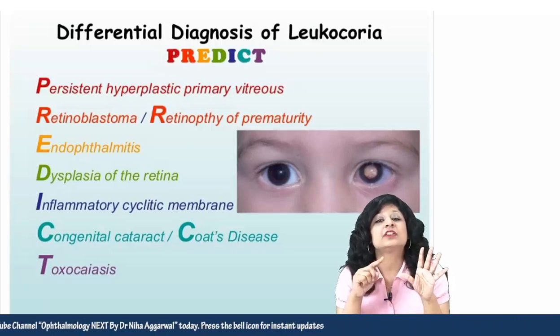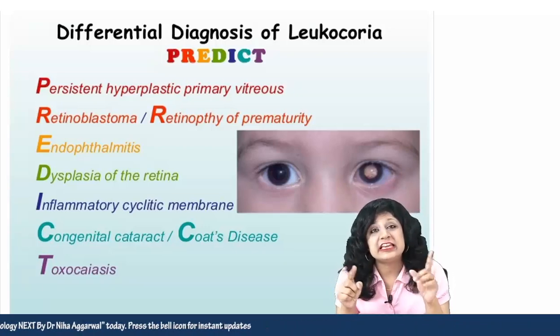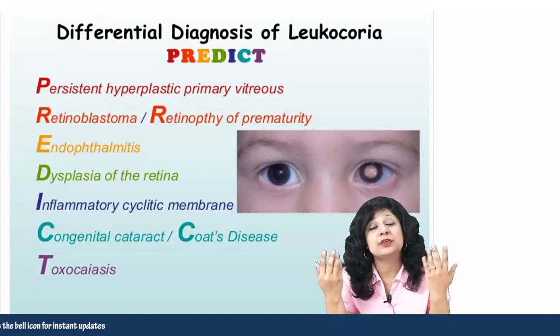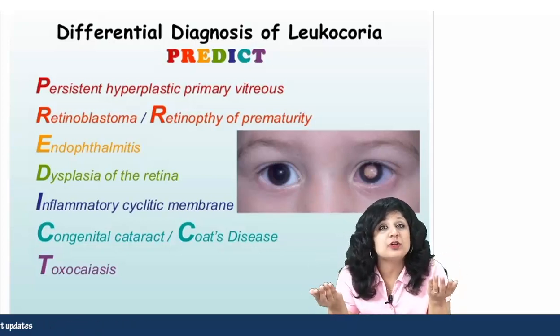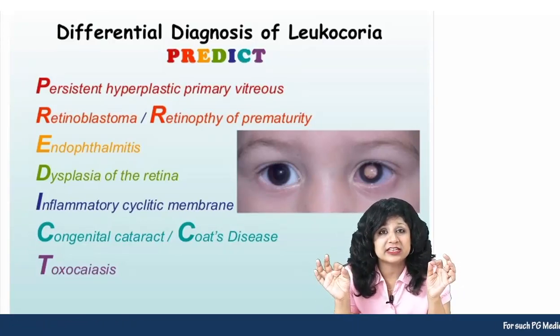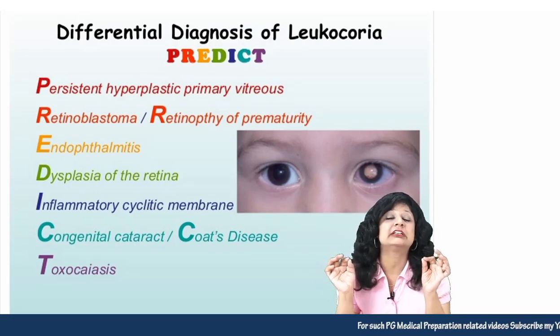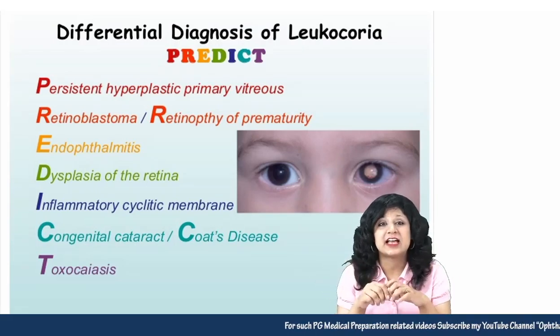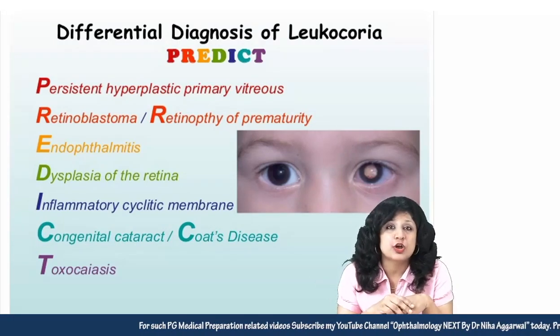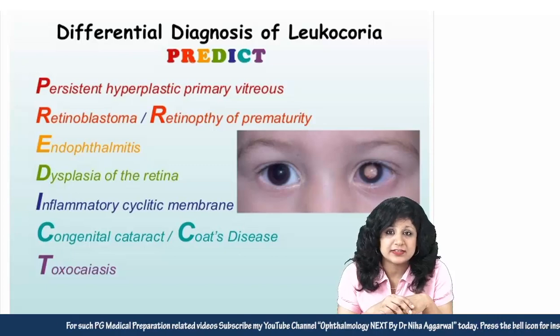C stands for congenital cataract, one of the most common causes of leukocoria. C also stands for Coats disease, which involves idiopathic vascular telangiectasias. And T stands for toxocariasis.